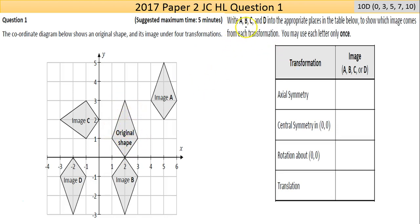In the box there you have to write A, B, C, or D into the appropriate places in the table below to show which image comes from each transformation. You may use each letter only once.